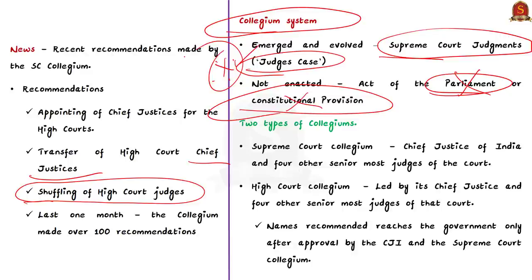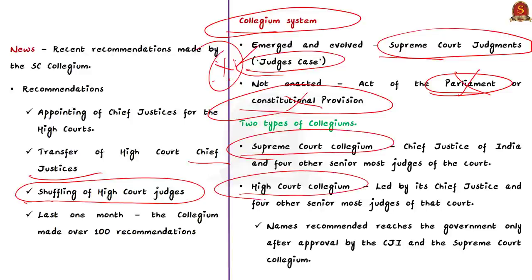Moving on to the next important point — in India we have two types of Collegiums. One is the Supreme Court Collegium and another is the High Court Collegium. The Supreme Court Collegium is headed by the Chief Justice of India. In addition to the Chief Justice, it comprises four other senior-most judges of the Supreme Court. Chief Justice of India plus four other senior-most judges — this is the composition of the Supreme Court Collegium.